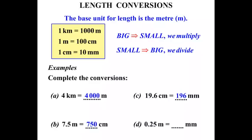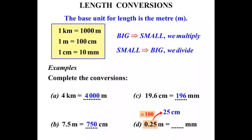Next: 0.25 meters equals how many millimeters? We'll do this in two steps. We know one meter equals 100 centimeters, and one centimeter equals 10 millimeters. First, let's change meters to centimeters by multiplying by 100. And 0.25 times 100 is 25, so we have 25 centimeters. Now changing from centimeters to millimeters, we use a factor of 10 and multiply by 10. And 25 times 10 is 250.